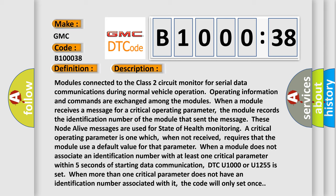When a module does not associate an identification number with at least one critical parameter within five seconds of starting data communication, DTC U1000 or U1255 is set. When more than one critical parameter does not have an identification number associated with it, the code will only set once.